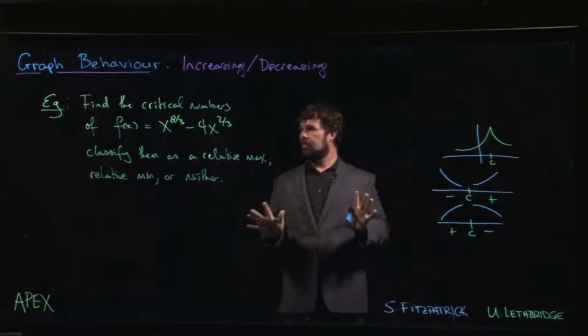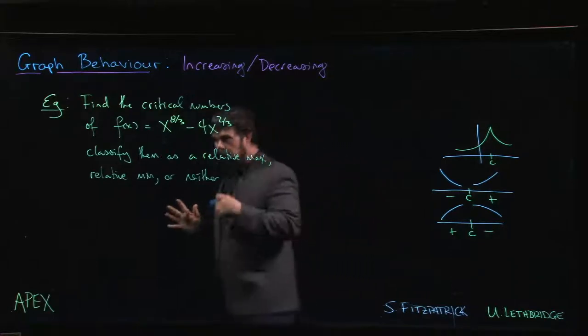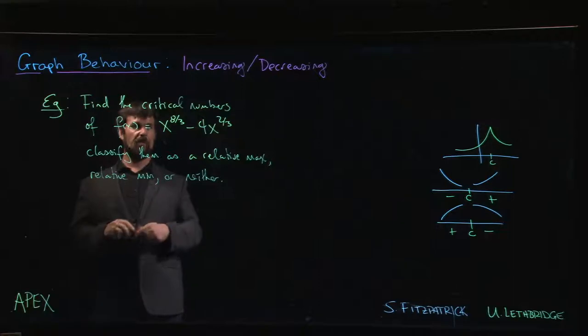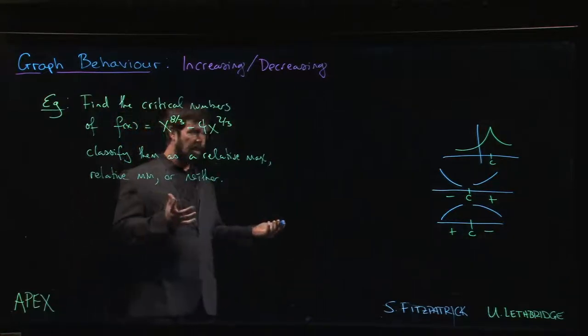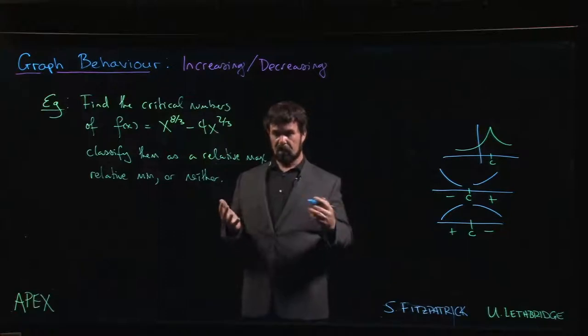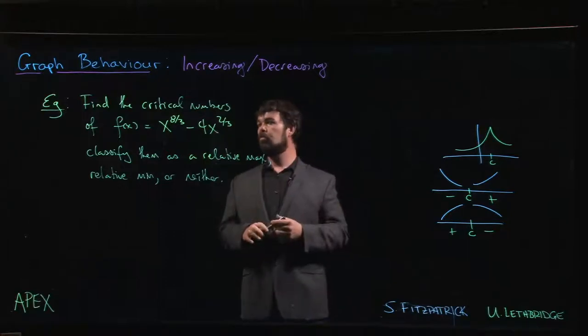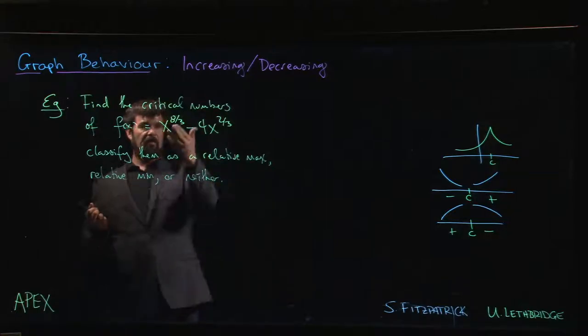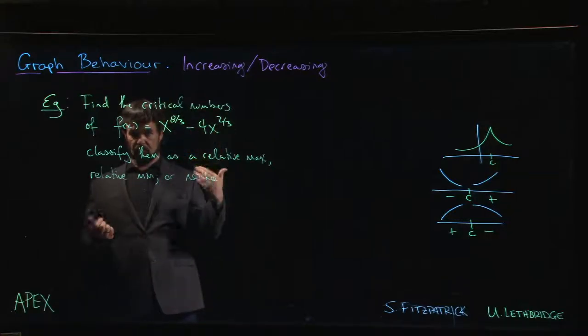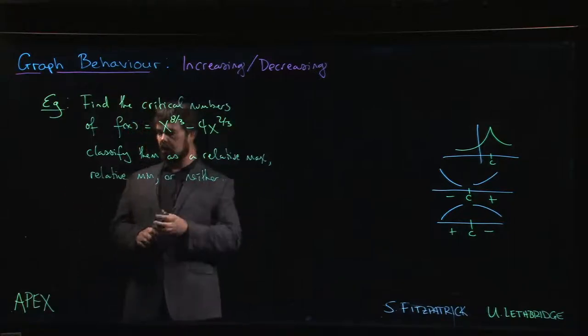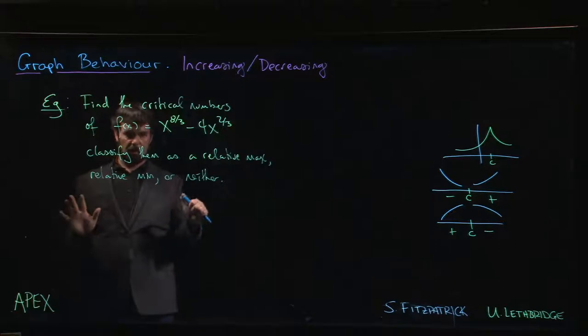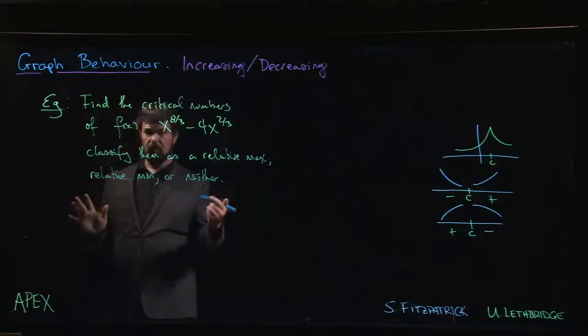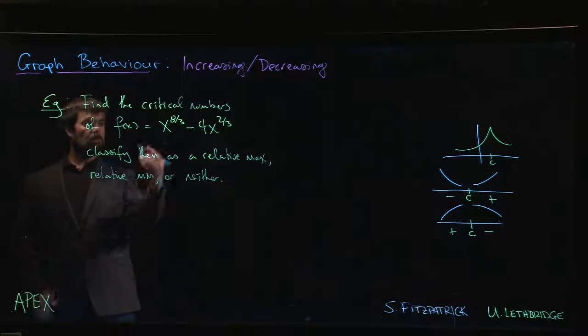We'll end with one last example for this section. This is similar to the previous example - we have a function, we want to find the critical numbers, and we want to classify them as a relative max, relative min, or neither. In principle it's exactly the same, but this problem is challenging for a lot of students simply because people tend to be rusty on their algebraic skills when it comes to things like fractional exponents. So we'll go through this one slowly and be careful with the algebra to make sure we have all the pieces in place.